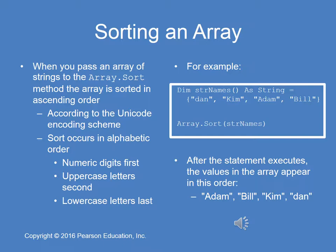When you pass an array of strings to array.sort, it is sorted in ascending order using the Unicode encoding scheme, which uses a series of priorities: numeric digits first, uppercase letters second, and lowercase letters third. So we'll compare the first character of each string, and if that's exactly the same, it'll go to the second character and use the same scheme. In the coded example, we have lowercase d-a-n, capital K-I-M, capital A-D-A-M, and capital B-I-L-L. Adam, uppercase A, will be first. Bill, uppercase B, will be second. Kim, because uppercase K has a higher priority than a lowercase d — if it were uppercase D, Dan would be third and Kim would be fourth, but that's not the case because of the Unicode numbering system.